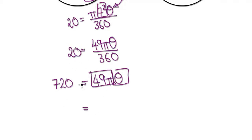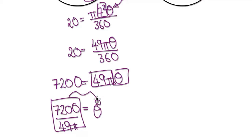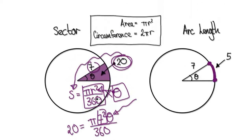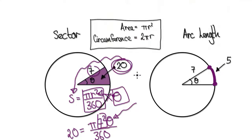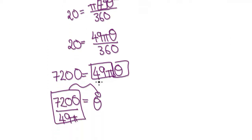This thing here should be an extra 0. So that would be 7200 / 49π equals theta. Punch this into your calculator — that will then give you theta. Theta represents the angle, represents this angle here. We can just leave it as this.